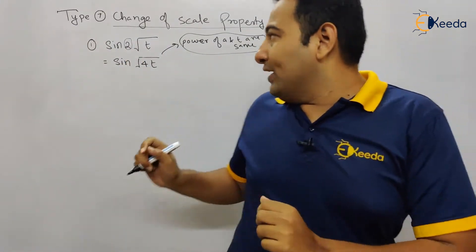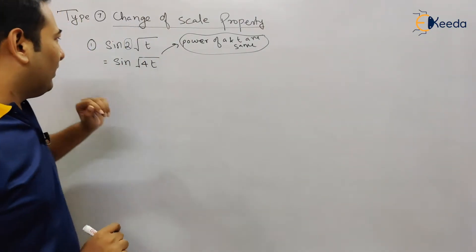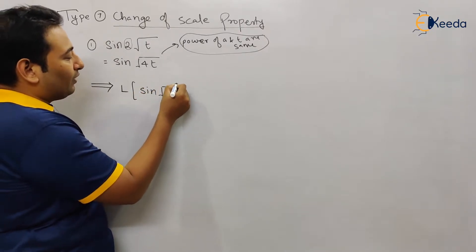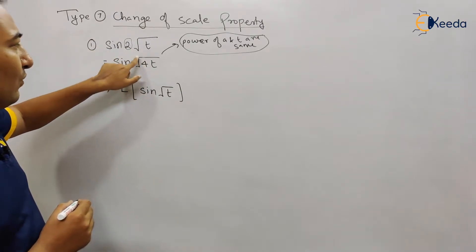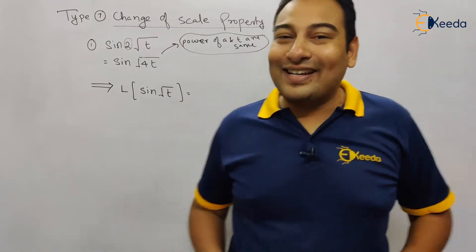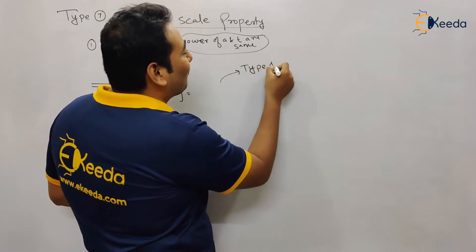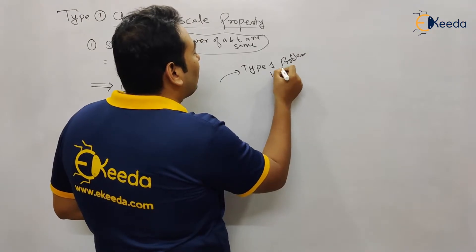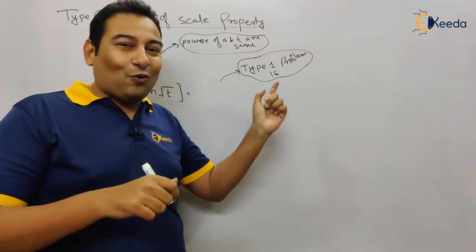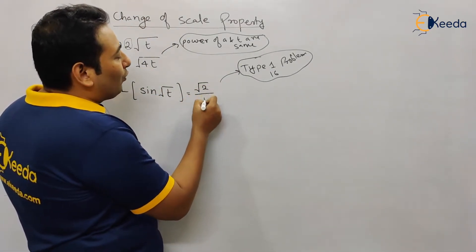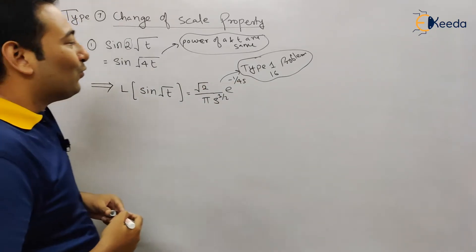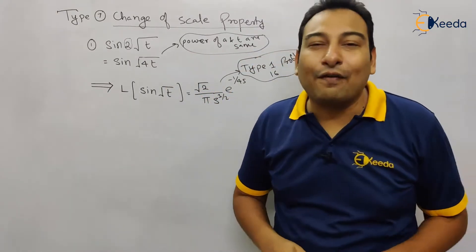Before going ahead, the technique is: forget about the scaling factor — whether it is 4 or 2 — and you are left with the Laplace transform of sin√t. We already solved this in Type 1, problem number 16, so I won't solve it again. If you don't remember, pause, go back and check. The result is: L{sin√t} = √(2/π) · s^(−3/2) · e^(−1/(4s)).